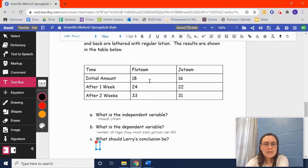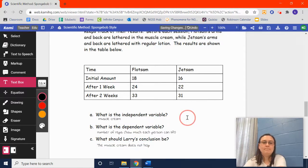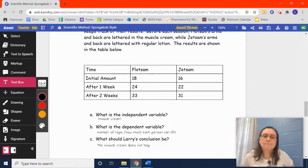And, what should Larry's conclusion be? Did Flotsam go up? Yep. Did Jetsam go up, though? Yes. So, we need to look at the difference. So, Flotsam could already lift more than Jetsam. Here, let's see the difference between week one and initial amounts. If we do 24 minus 18, that's 6. If we do 22 minus 16, that's 6. So, the change is the same. It's 6 for Flotsam, 6 for Jetsam. So, 33 minus 24, that's 9. 31 minus 22 is also 9. So, the difference between each of these is the same. So, was there really any change? Not really. Nothing significant. So, the muscle cream does not help. It's a gimmick. Trying to get your money.